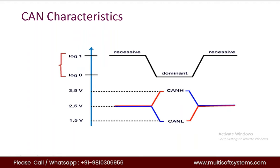When CAN high and CAN low are applied with 2.5 volts, the actual differential voltage will be zero volts — this is the recessive state. When CAN low is pulled down to 1.5 volts, the actual differential voltage will be 2 volts. This is treated as a dominant bit, or logic zero.